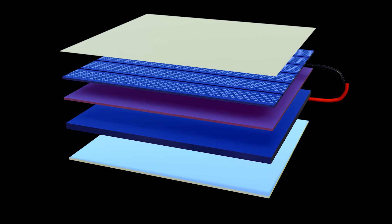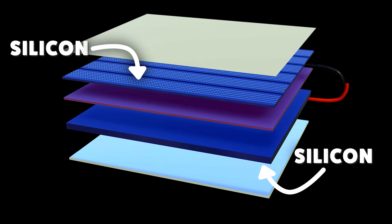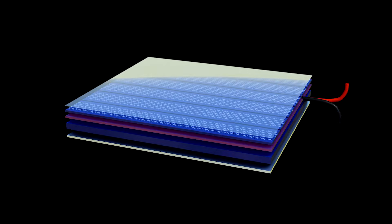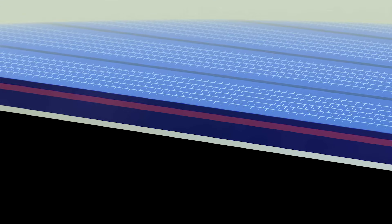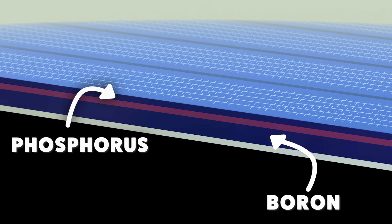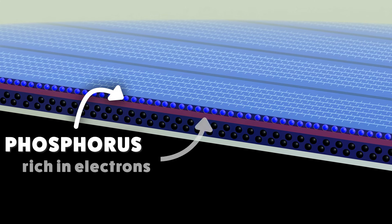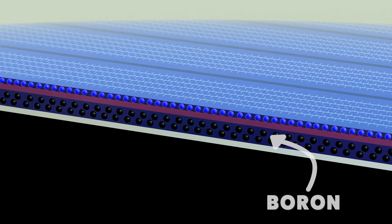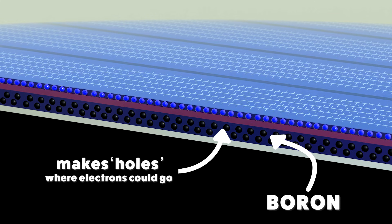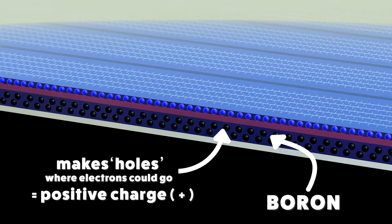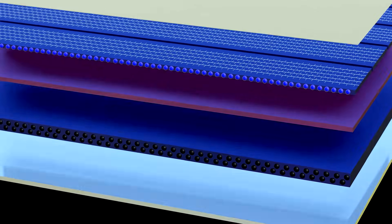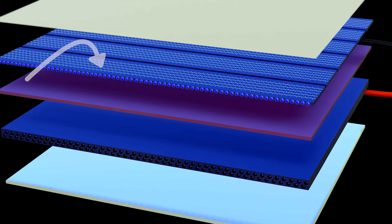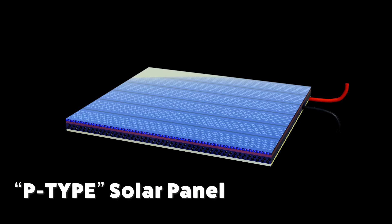Solar panels consist of two main layers of silicon, which are typically seen as the dark blue or black surface of the panel. These layers are treated with different elements like boron and phosphorus to create different electrical charges — positive and negative. One layer has phosphorus added, becoming rich in electrons and giving it a negative charge. The other layer has boron added, which creates an excess of holes — gaps where electrons could be — essentially giving it a positive charge. In most solar panels the top layer holds the excess electrons and the bottom layer has the excess holes. This is characteristic of a p-type solar panel.